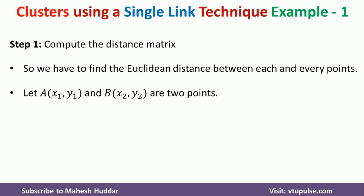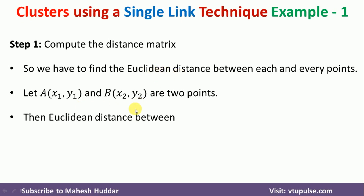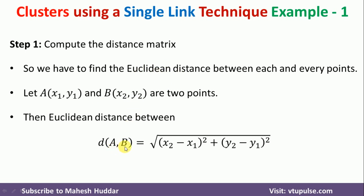Let us assume that A and B are the two points, where X1, Y1 are the coordinates of A and X2, Y2 are the coordinates of B. The distance between A and B is always equivalent to the square root of (X2 minus X1) squared plus (Y2 minus Y1) squared.